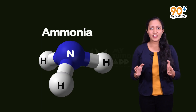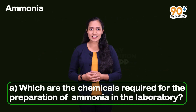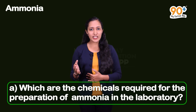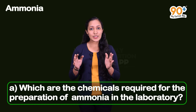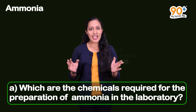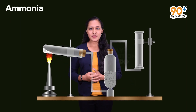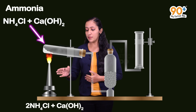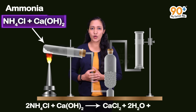Ammonia related previous year questions - the first question is: which are the chemicals required for the preparation of ammonia in the laboratory? So let us look at the laboratory preparation of ammonia. Ammonium chloride NH4Cl and calcium hydroxide Ca(OH)2, when heated together, is when ammonia is formed.